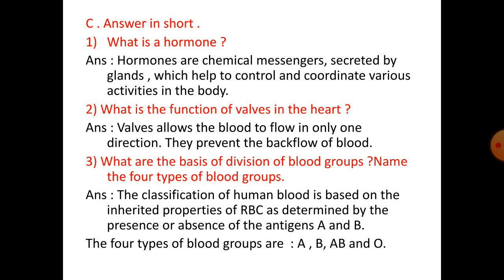Valves allow blood to flow in one direction only; they prevent the backflow of blood. Number three: what are the bases of division of blood groups? Name the four types. The classification of human blood is based on the inherited properties of RBC as determined by the presence or absence of antigens A and B. The four types of blood groups are A, B, AB, and O.